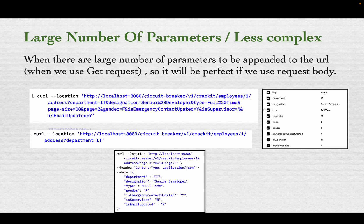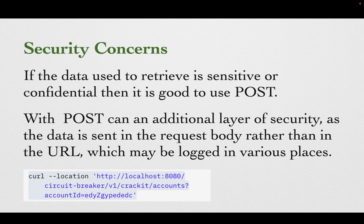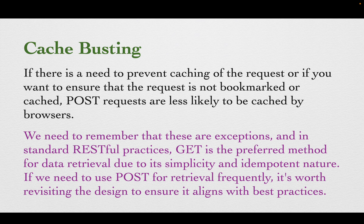To summarize: the first reason to use POST for retrieval is when there are a large number or complex set of parameters — it is easier for clients and we can send them in the request body. The second reason is security concerns — sensitive information should go in the request body, not the URL. The third reason is cache busting — POST is less likely to be cached.